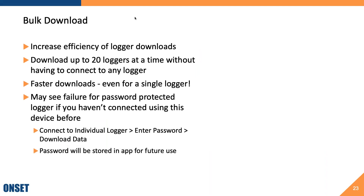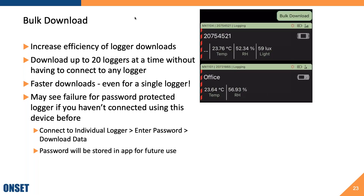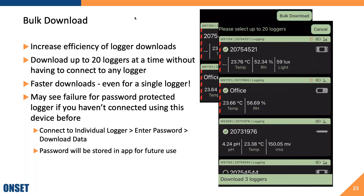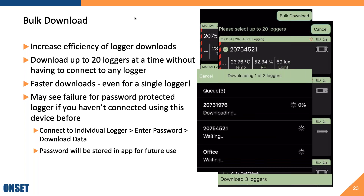On the main Devices tab, you'll also see a new bulk download feature added to increase the efficiency of logger downloads. When you click the bulk download button, you'll enable bulk download mode, which gives you the option to select up to 20 loggers and download all the data from each without individually connecting to each logger. You may see a failure if you're working with password-protected loggers that you haven't connected to using your specific device before.